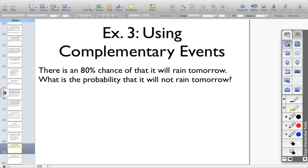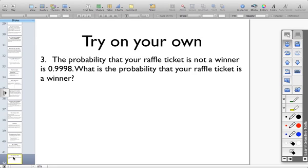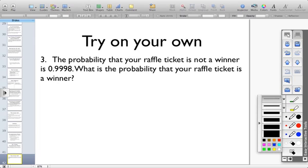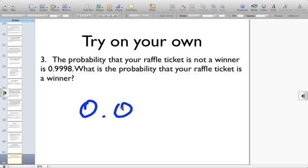And to finish us off, try this one on your own. The probability that your raffle ticket is not a winner is 0.9998. What's the probability that your raffle ticket is a winner? Hopefully you've had a chance to answer it.